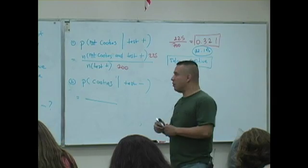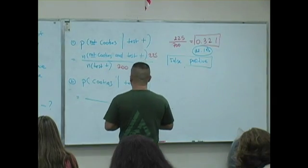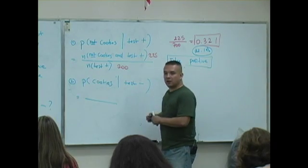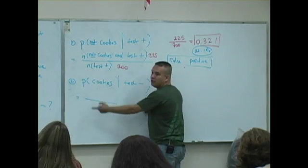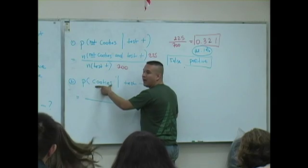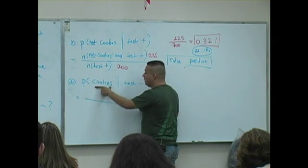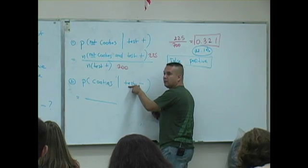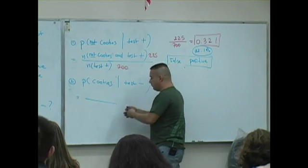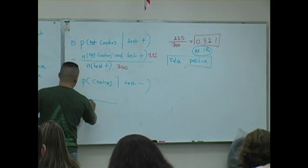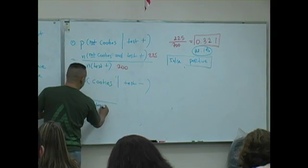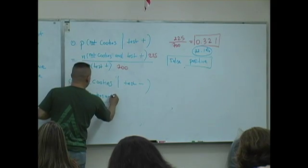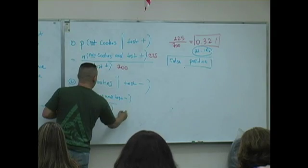The second situation is known not as a false positive. This is a false what? Negative. Meaning, guess what? They're asking you to determine the likelihood that you have cooties given that you tested what? Negative. So, of all the people that tested negative, number that test negative, how many have cooties and test what? Negative.